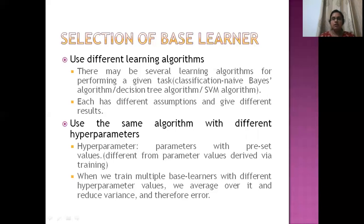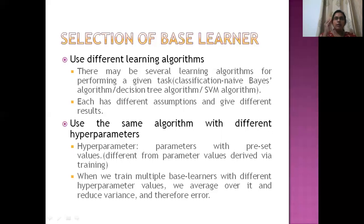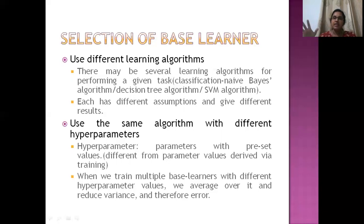The second method is to use the same algorithm but with different hyperparameters. Hyperparameters are parameters determined before training — set by experts or through trial and error. By varying hyperparameters on one algorithm, we can get different results and combine them to reduce error.